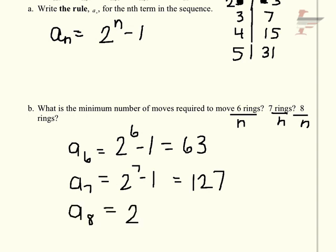And a_8 is 2^8 minus 1, which is 256 minus 1, so 255. These are all the number of moves required.